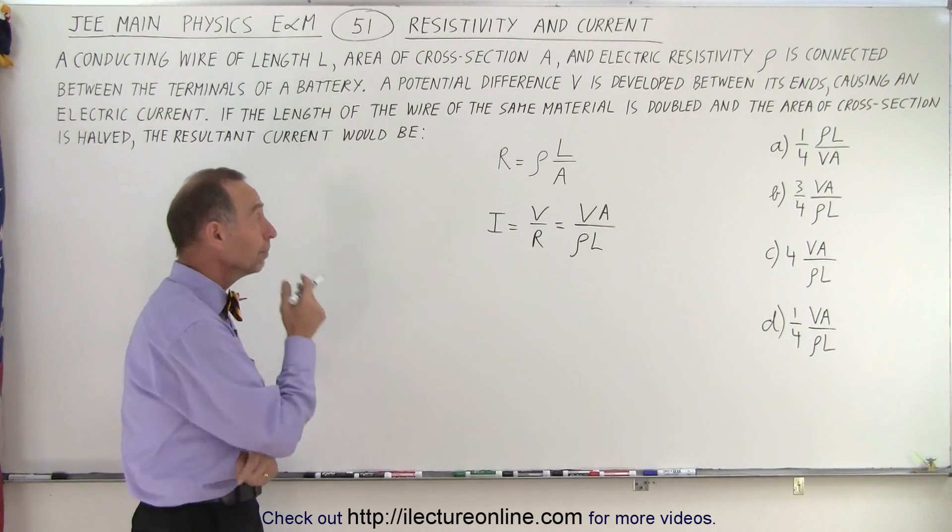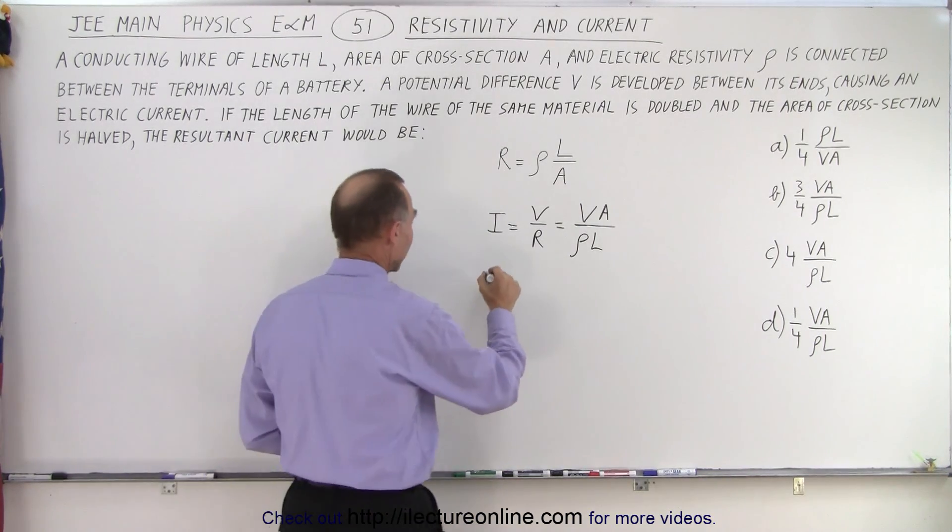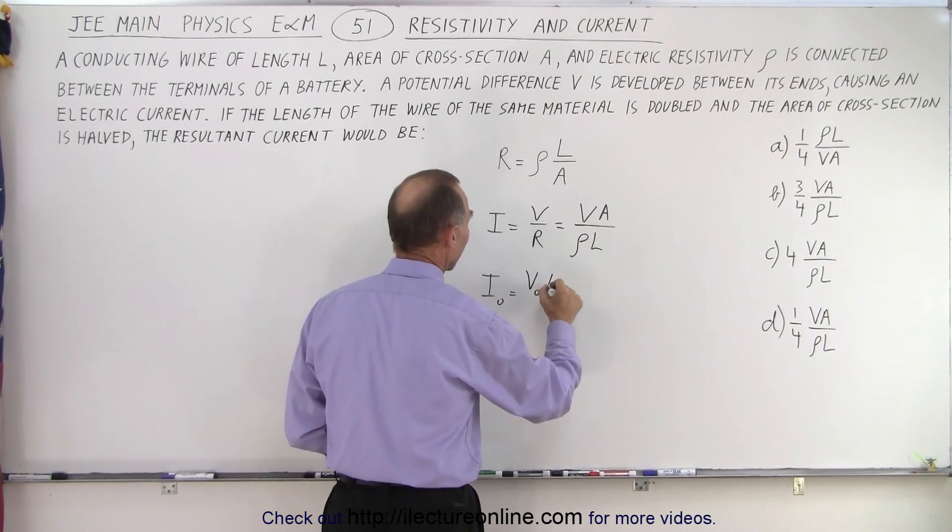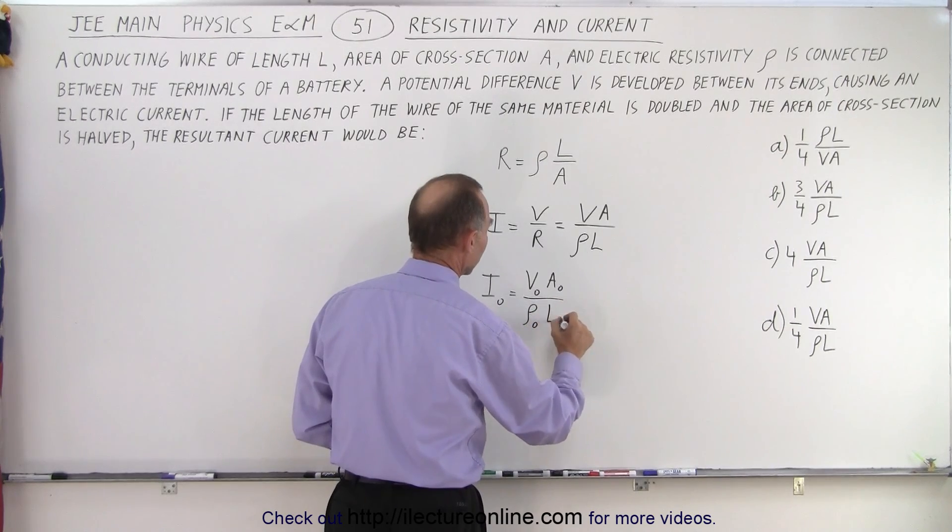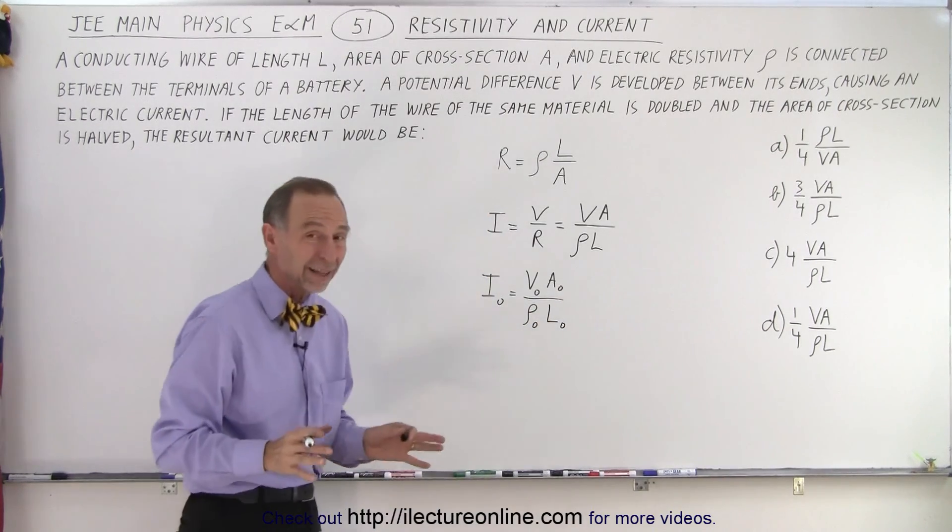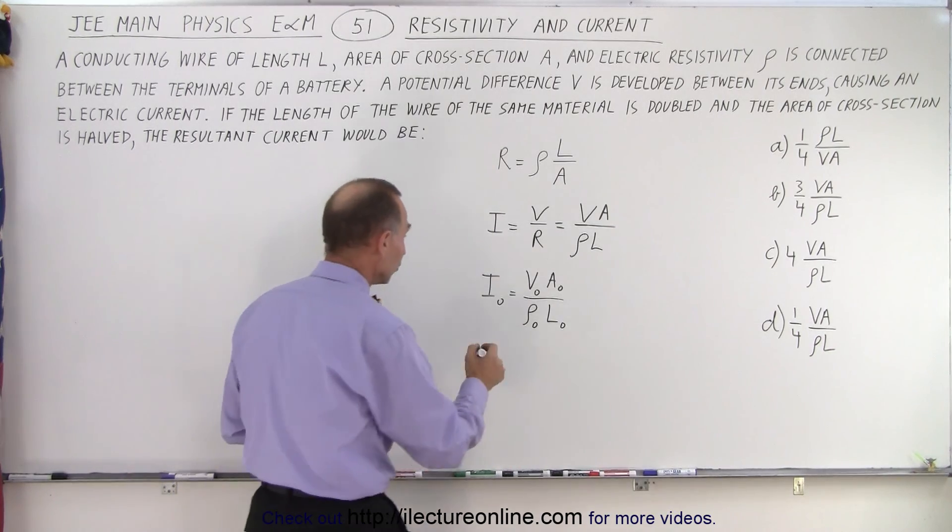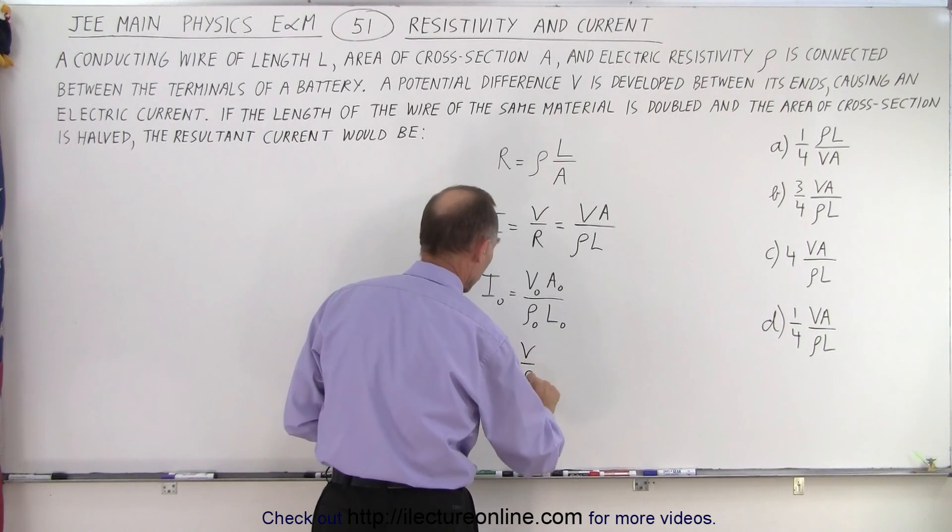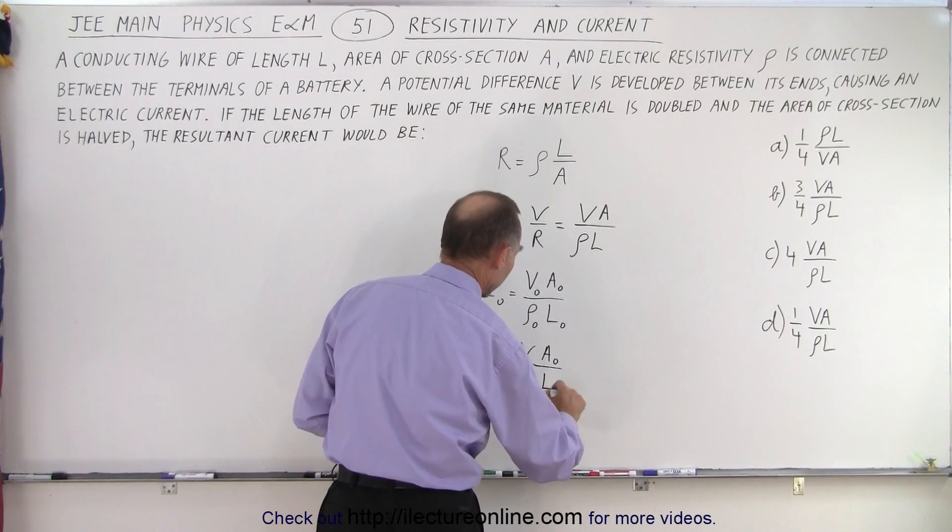The way to solve the problem is to put in the initial current. I initial equals V initial times the initial cross-sectional area divided by rho initial times the initial length. We realize that the voltage and the resistivity are not going to change. So I initial equals V over rho times the original area and the original length.